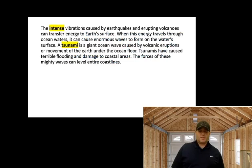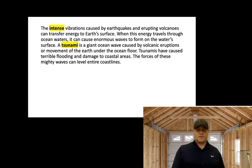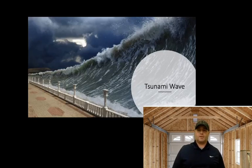The intense vibrations caused by earthquakes and erupting volcanoes can transfer energy to Earth's surface — when this happens, we get tsunamis. A tsunami is a giant ocean wave caused by volcanic eruptions or movement of the Earth under the ocean floor. Tsunamis have caused terrible flooding and damage to coastal areas. The forces of these mighty waves can level entire coastlines. Here is a picture of a tsunami wave — that is a real picture. Tsunami waves can sometimes reach 20, 25, 30 feet in height and can wipe out entire cities.